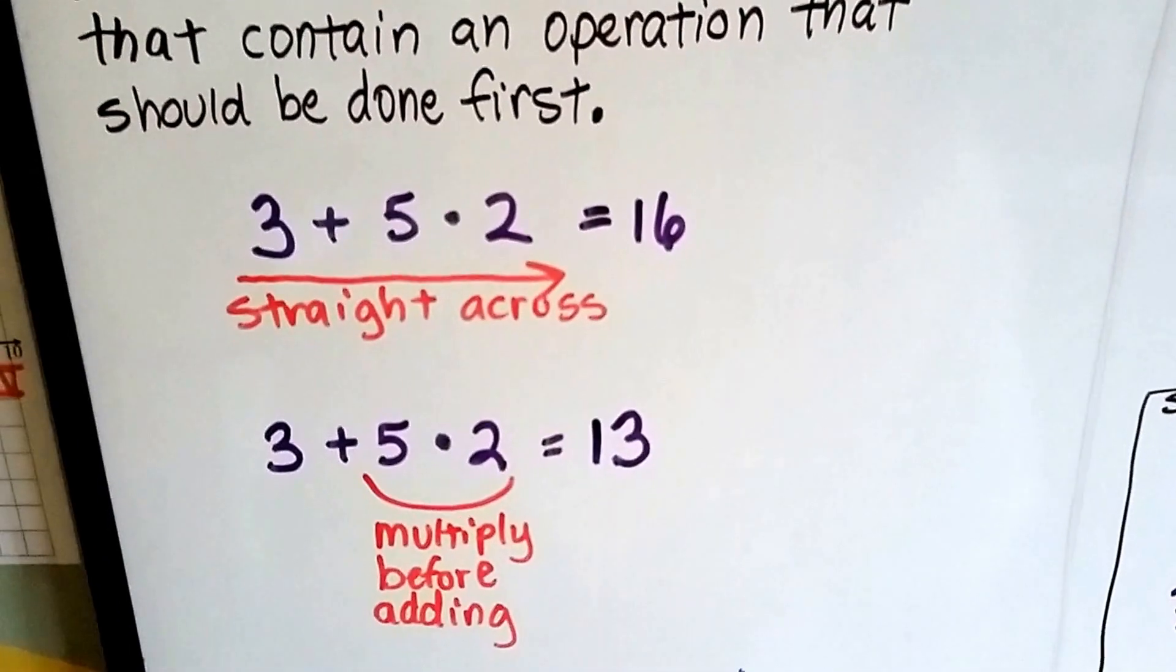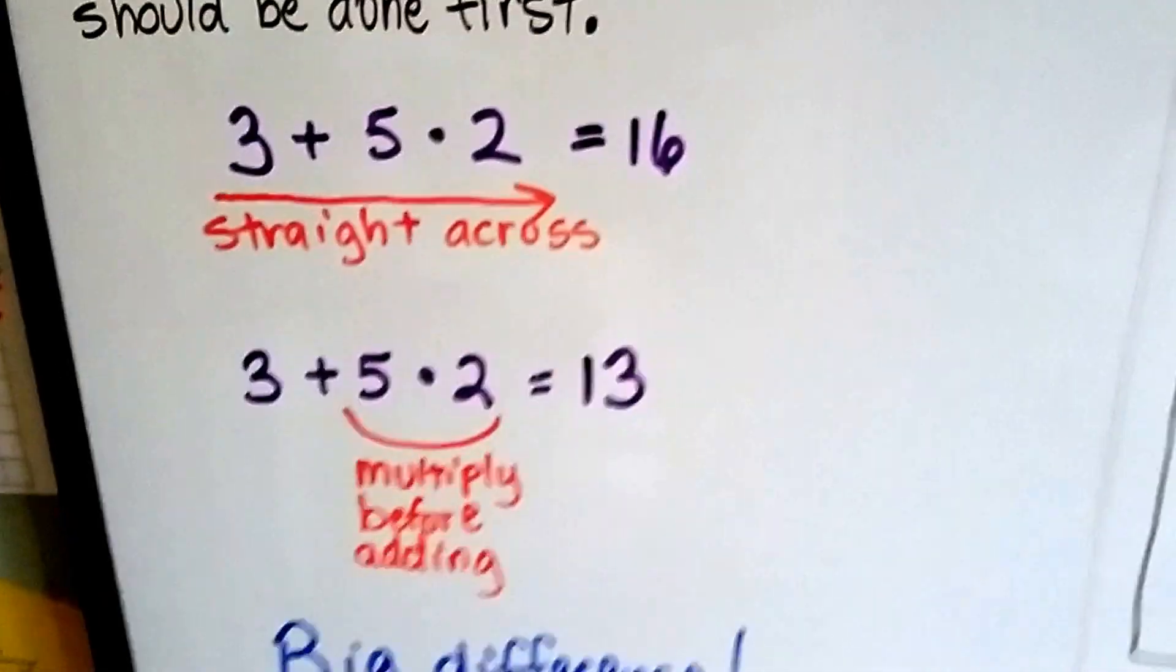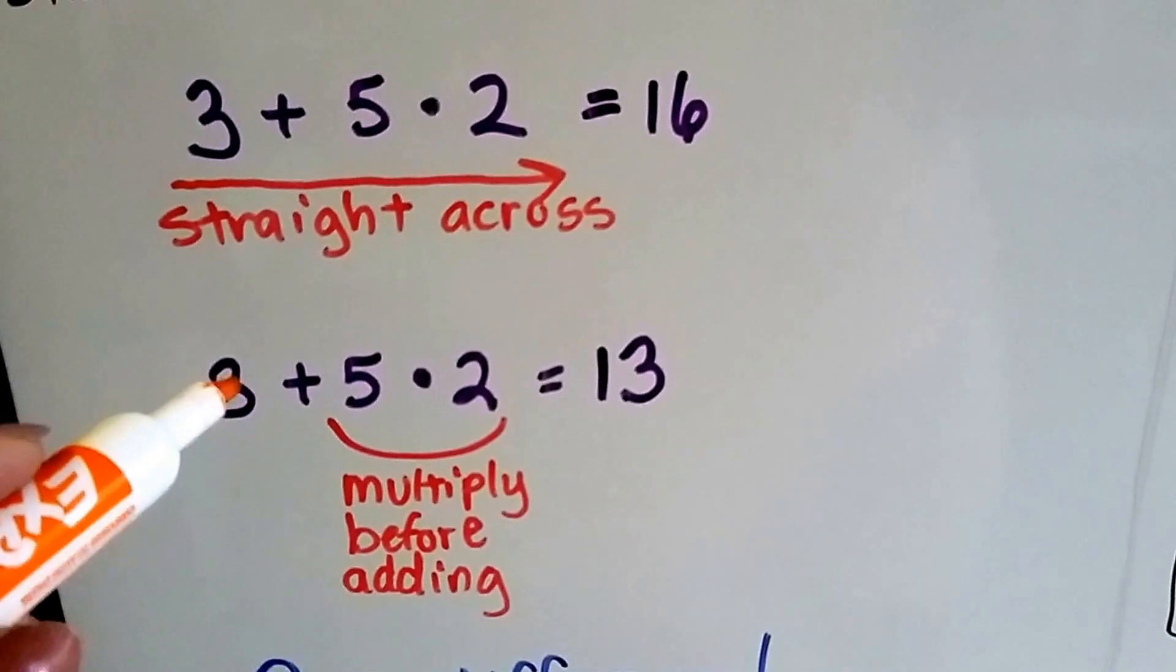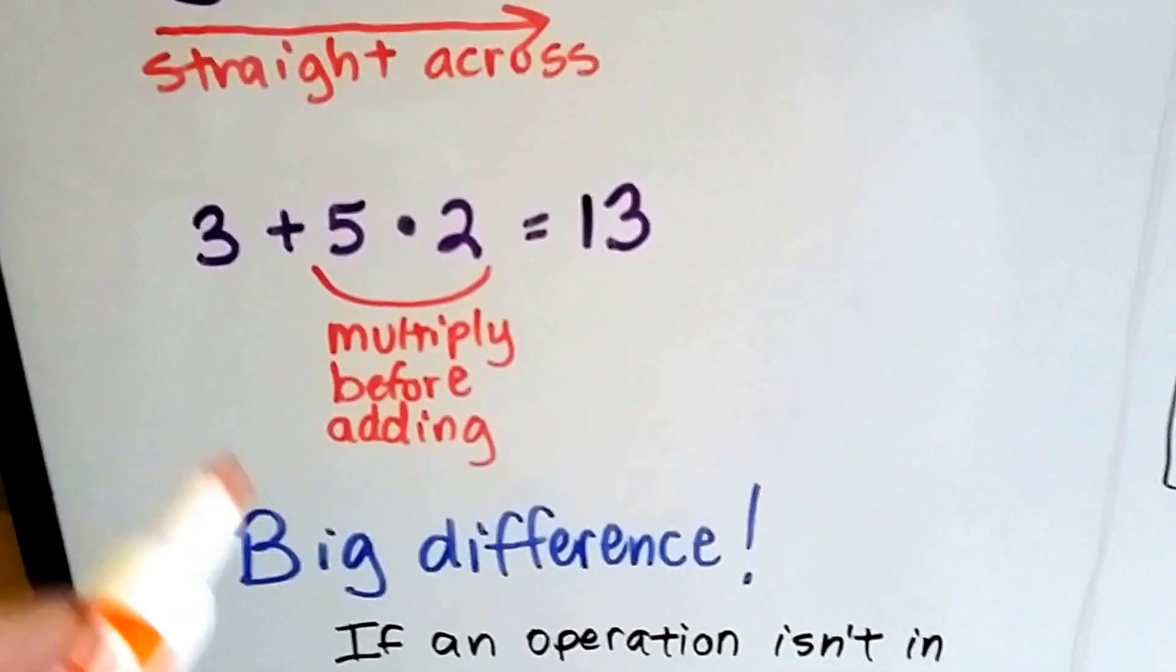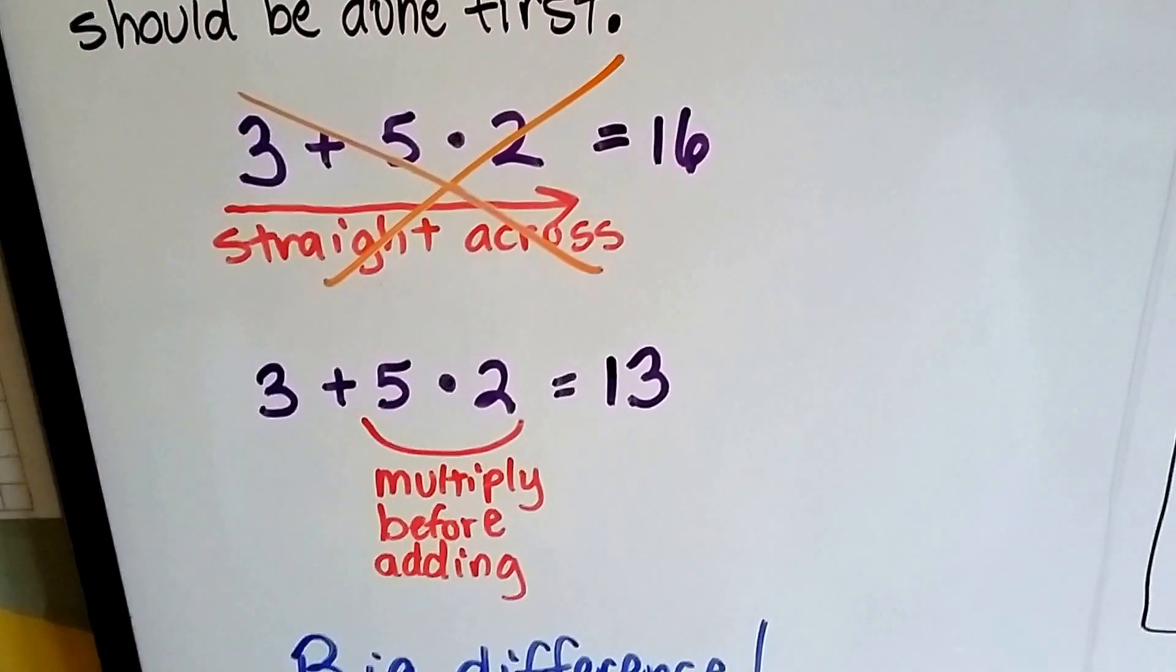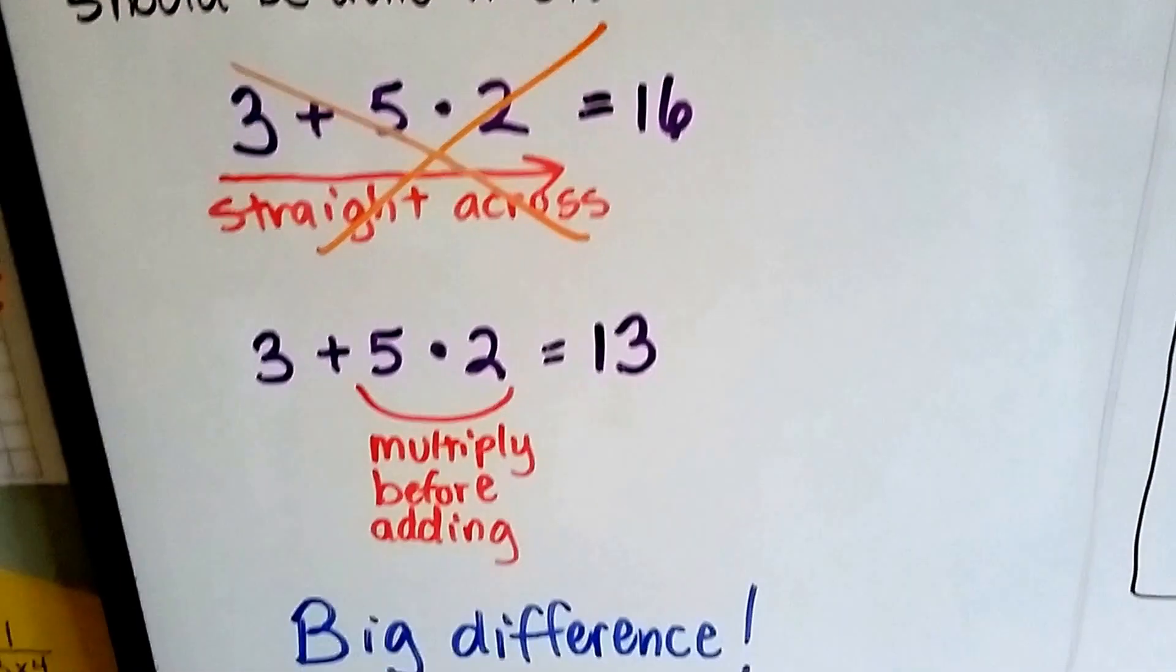If we had done the order of operations, we would have done the 5 times 2 first and gotten 10, then added the 3 and gotten 13. That's a big difference. This one is wrong. You've got to multiply before you add, and the answer's 13.